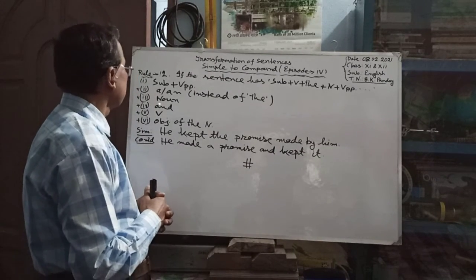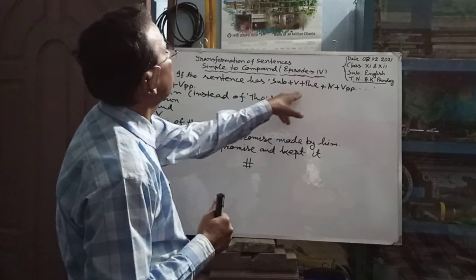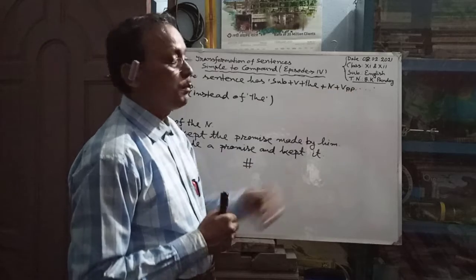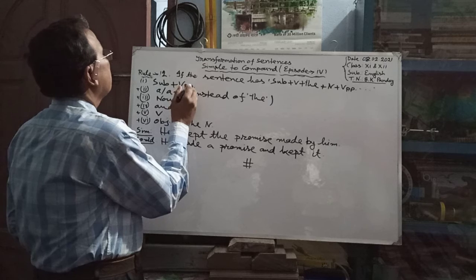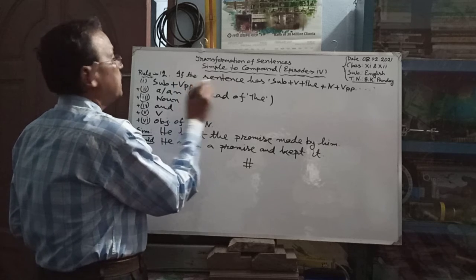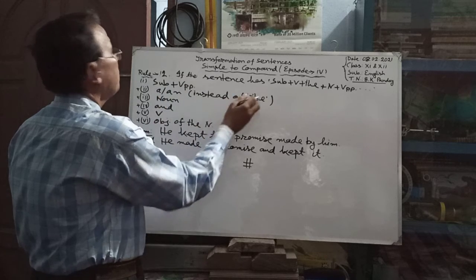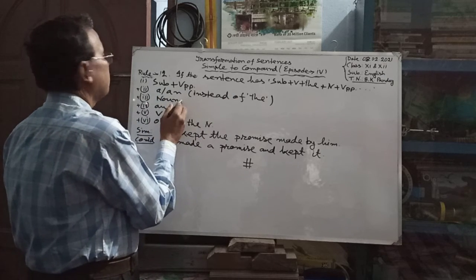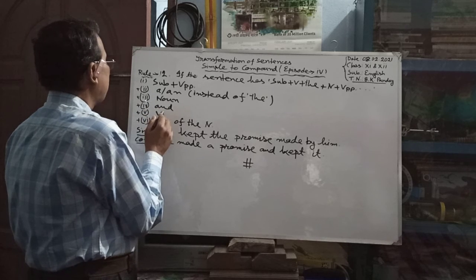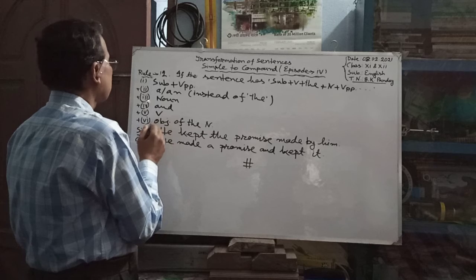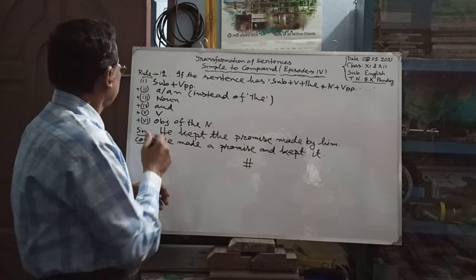Dear students, Rule Number 12: If the sentence has subject plus verb plus 'the' plus noun plus verb in past participle form, then we have to write the subject first and the verb in past participle form, then 'a' or 'an' instead of 'the', after that the given noun, then 'and', after that the verb, and last of all the objective form of the noun.